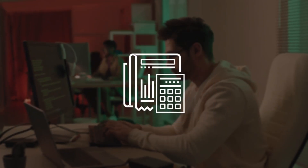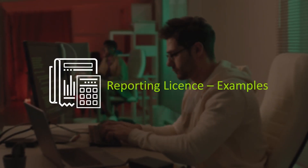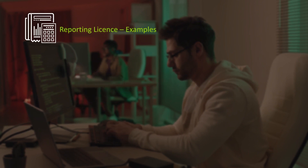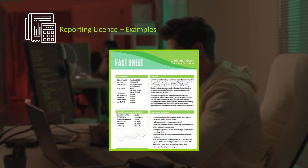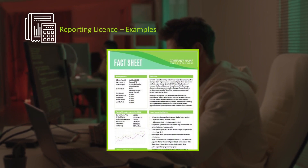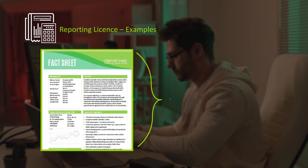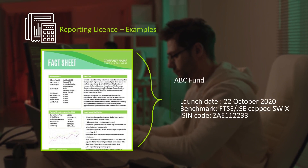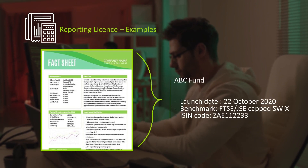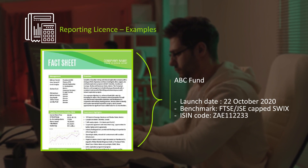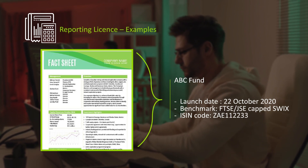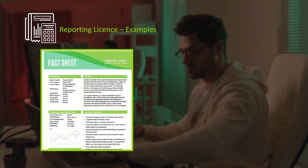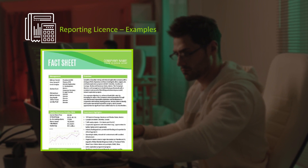Reporting license examples: Here we have a fact sheet of ABC fund which shows its launch date, the benchmark index in use, which is the FTSE JSE CAPT Strix, as well as the IASN for the fund.